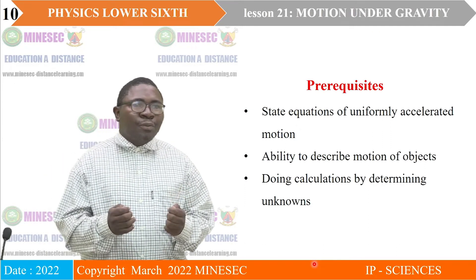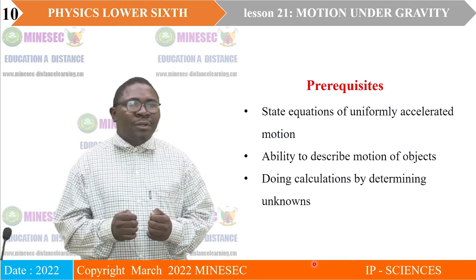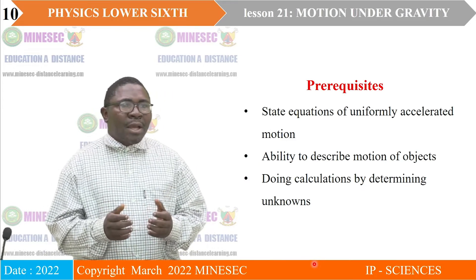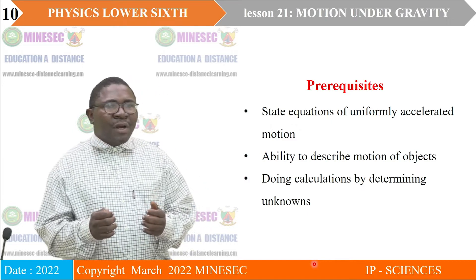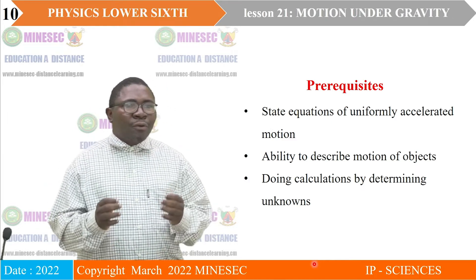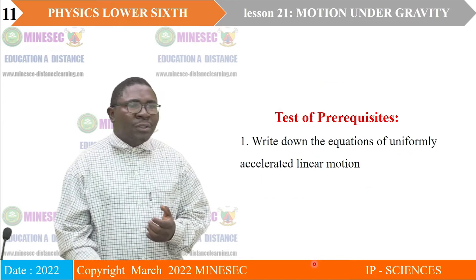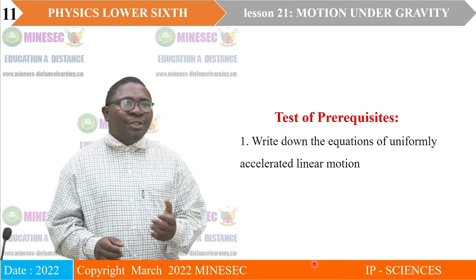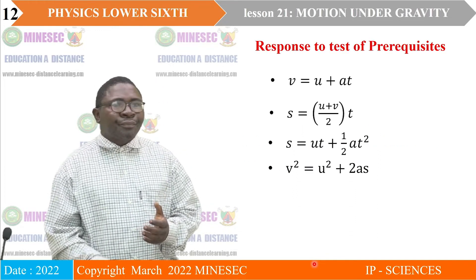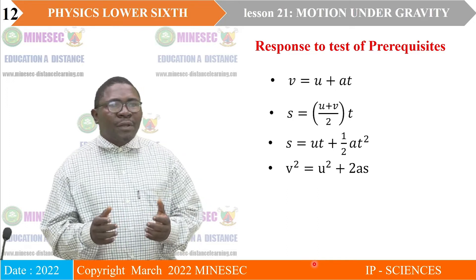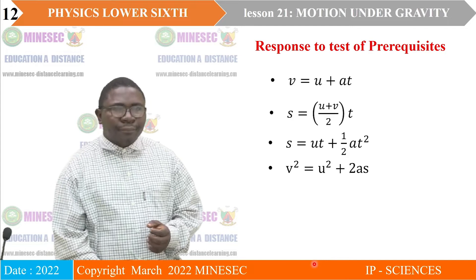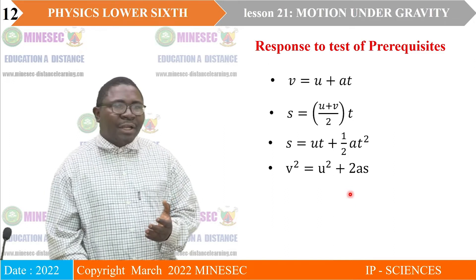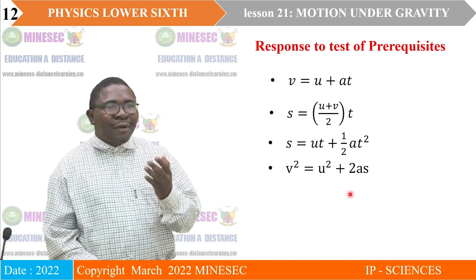The prerequisite knowledge — what you are supposed to know before coming into this lesson. You should be able to state equations of motion of uniformly accelerated bodies, describe motion of objects, and do calculations by determining unknowns like simple linear equations. Test of prerequisite: write down the equations of uniformly accelerated linear motion. These are the equations we have had in the previous lesson, and I expect each and every one of us to be familiar with them.